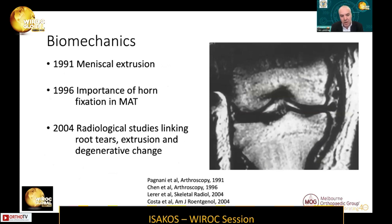Where our understanding has improved is in the biomechanical implications of these injuries. In the early 90s, we saw the first descriptions of meniscal extrusion and the subsequent understanding of the importance of fixing the horns in meniscal allograft transplantation. But it was only in the 2000s when our radiological colleagues made the link between root tears, extrusion, and degenerative change.